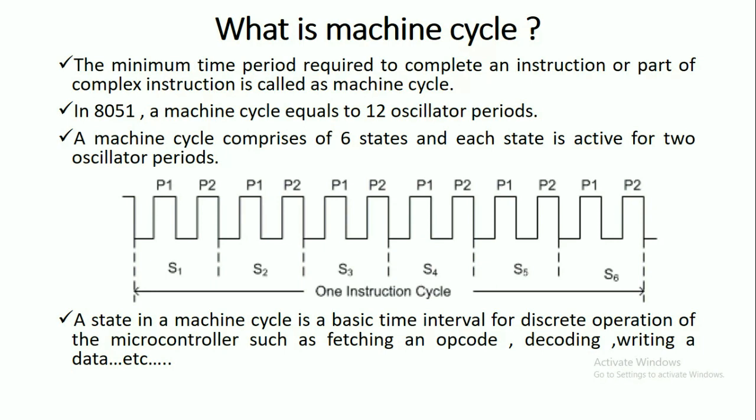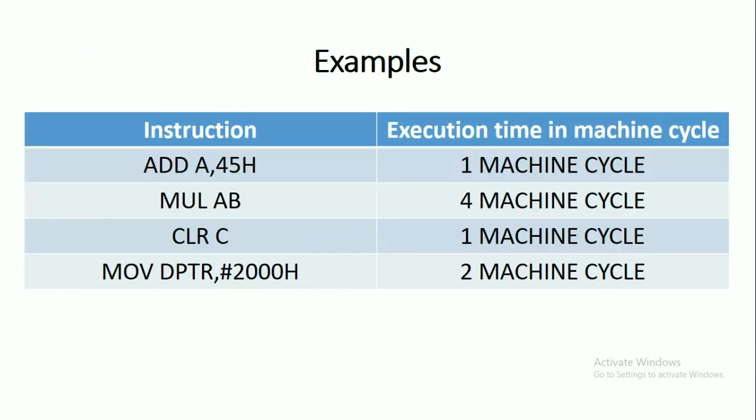So here we have some examples for a given instruction. We require the number of machine cycles which are varied. For example, ADD A,45H - so here 45H is the address location - for this one requires one machine cycle.